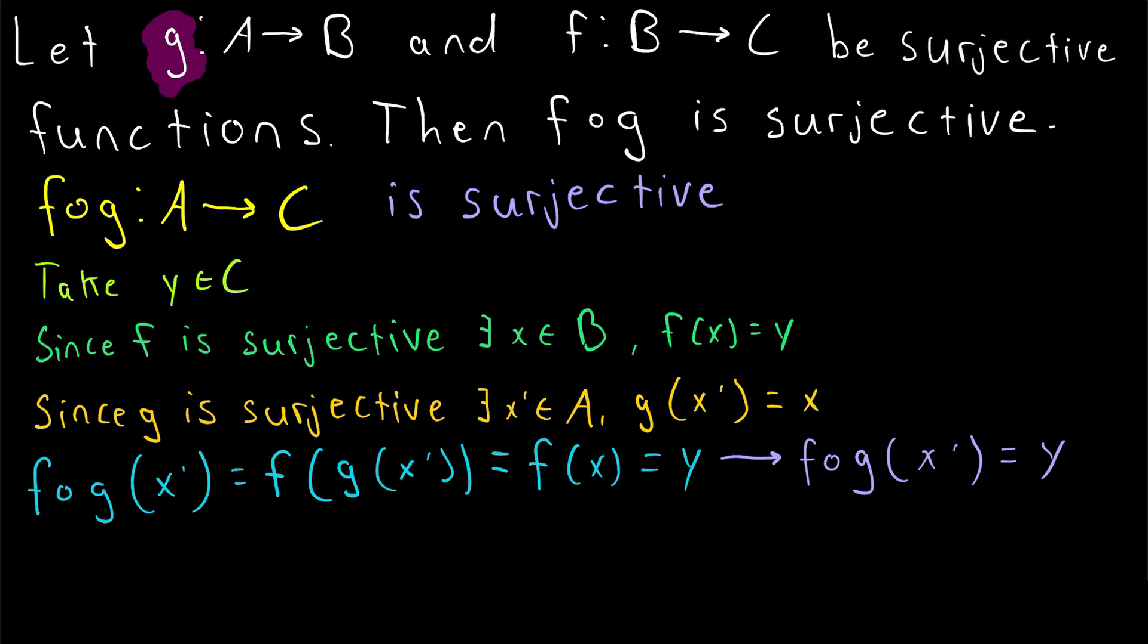Now, of course, you may wonder, is the converse of this statement true as well? If we knew that F of G was surjective, would we be able to conclude that F and G are surjective? Let me know what you think about that down in the comments, and I'll do a video talking about it pretty soon. So I hope this video helped you understand how to prove this fun result about the composition of surjective functions. We see that function composition preserves surjectivity. Pretty cool.